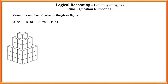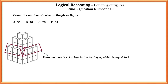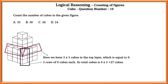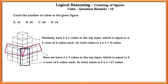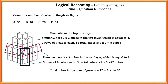Logical reasoning counting of figures — cubes. Question number ten: count the number of cubes in the given figure. We have three by three cubes in the top layer, which equals nine. Three rows of nine cubes each gives a total of 9 times 3 equals 27 cubes. Additionally, there are two by two cubes in the upper layer equaling four, with two rows giving 4 times 2 equals eight cubes, plus one cube in the topmost layer. Total cubes: 27 plus 8 plus 1 equals 36.